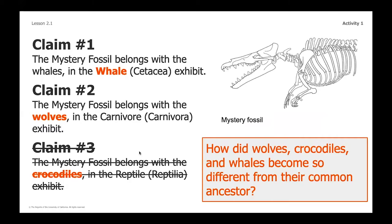We're going to move into a deeper question in this second chapter and really dive into how all these different species came about on Earth and look so different. If they're all related, how did they end up becoming so different? We're going to focus around those three species — wolves, crocodiles, and whales — and think about why they are so different from their common ancestors.